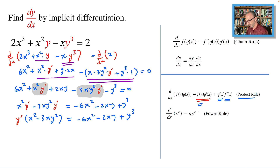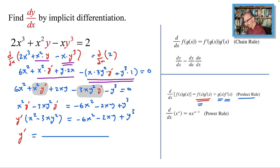Factoring y prime out, we have y' times (x² - 3xy²) = -6x² - 2xy + y³. Dividing both sides by (x² - 3xy²) leaves y prime alone, so y' = (-6x² - 2xy + y³) / (x² - 3xy²). And that should do it.